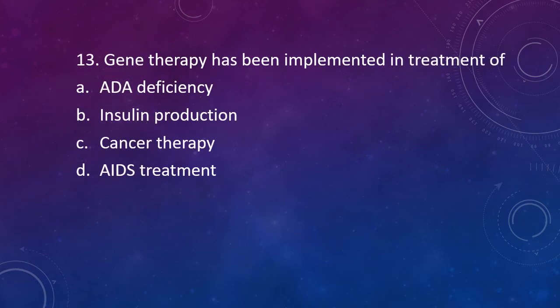Question 13: Gene therapy has been implemented in treatment of? Option A: ADA deficiency. Option B: Insulin production. Option C: Cancer therapy. Option D: AIDS treatment. The correct answer is Option A — ADA deficiency has been treated with gene therapy.